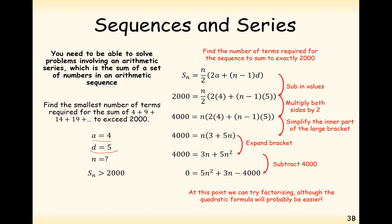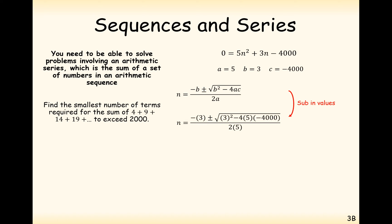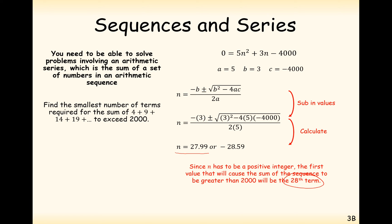We can factorize or use a polynomial solver on the calculator. This gives two values: n = 27.99 or n = −28.59. Since n must be a positive integer and we want the sum to exceed 2000, we round up to n = 28. Adding the first 27 terms gives just under 2000, but adding the 28th term pushes the sum over 2000.